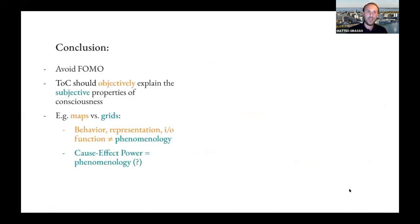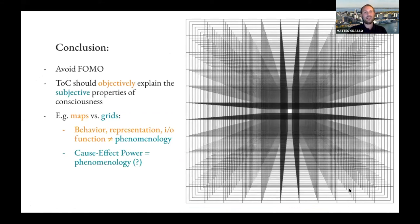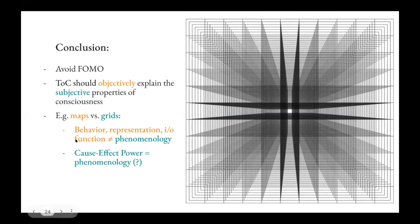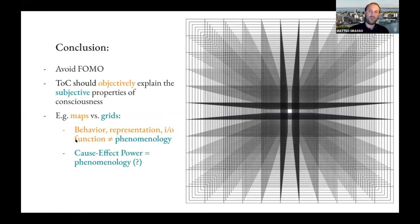The take-home message: try to avoid the fallacy of misplaced objectivity, but also avoid missing out on the relevant properties we should explain — the subjective properties of experience. Theories of consciousness should objectively explain subjective properties, which is not only possible but requires going beyond function, representation, and behavioral equivalence. Our paper shows a simple example reminiscent of different brain systems: if you stick to behavior, representation, and function, you can't find the intrinsic difference, but if you unfold the cause-effect power of the two systems, you find the intrinsic spatial properties that characterize phenomenology — for instance, when humans perform a fixation function. Thank you.